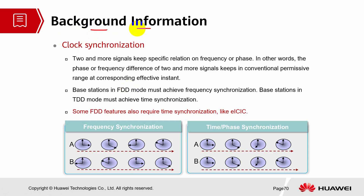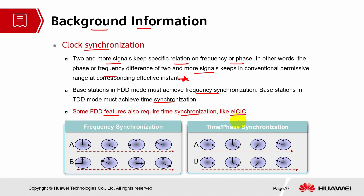Let's look into the background information on clock synchronization. Two or more signals keep a specific relation on frequency or phase — the phase or frequency difference of two or more signals will remain within a permissive range at the corresponding effective instance. Base stations in FDD mode must achieve frequency synchronization, while base stations in TDD mode must achieve time synchronization. Some FDD features also require time synchronization, like EICIC, which is an interference mitigation feature.